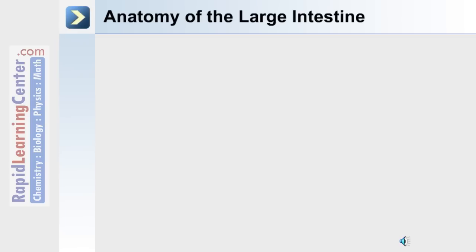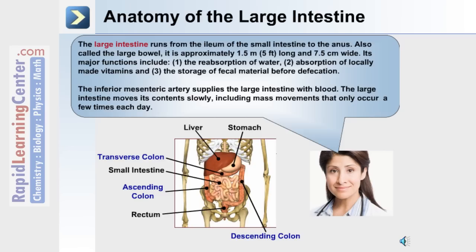After the small intestine within the digestive system is the large intestine. Highlighted in blue font on the diagram are the three major regions of the large intestine: the ascending colon, the transverse colon, and the descending colon.